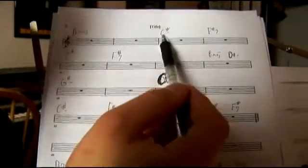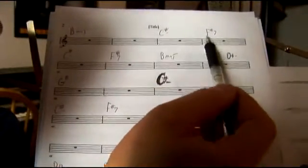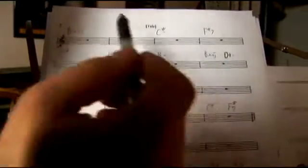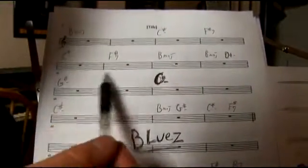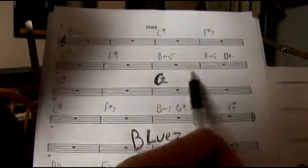Then we go to C sharp. So our one major to our two minor for a measure. Then we have F7, which is our V7 for a measure. Then we're back to two minor, V7, a measure each to one.